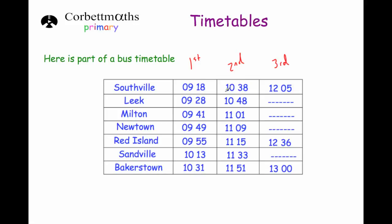This is the second bus, so it starts at 10.38, it arrives at Lake at 10.48, and so on, and finally stops at Bakertown at 11.51. The last bus has dashes, which means it doesn't stop at those locations — it doesn't stop at Lake, Milton, Newtown or Sandville. So it goes straight from Southville to Red Island and then from Red Island to Bakertown. Maybe it's what we call an express bus that goes on the motorway rather than through some smaller towns or villages. So this is a typical timetable — let's answer some questions on it now.